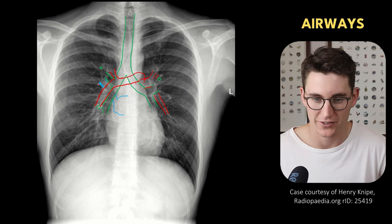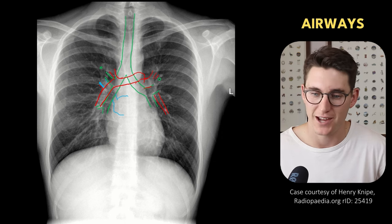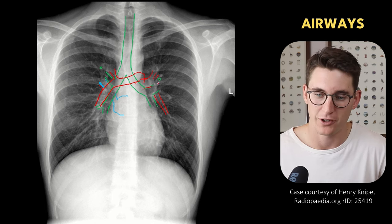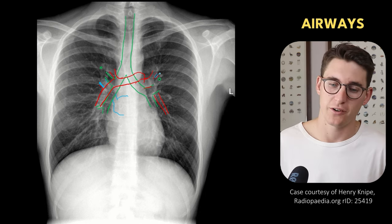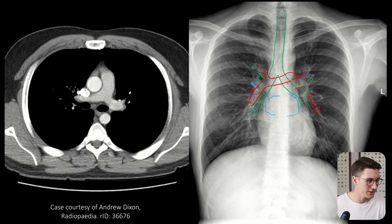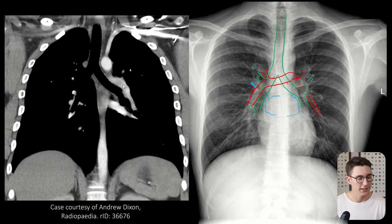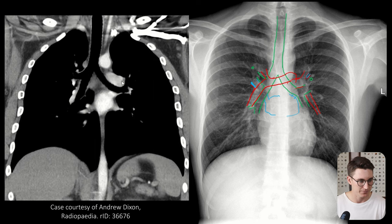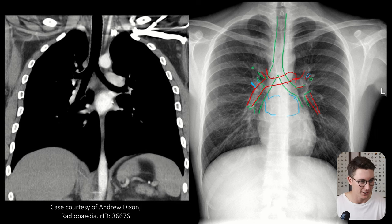This anatomy is variable and we don't have such a nice hilar angle on the left as we can see on the right, but we can appreciate the angle formed between our left interlobar artery and these superior branches to our left upper lobe. We also have some density that is a result of the left superior pulmonary vein draining towards this left atrium behind the heart. We can see our left pulmonary artery jumping over that left main bronchus and giving off this left interlobar artery, as well as the superior pulmonary veins coming back into this left atrium.